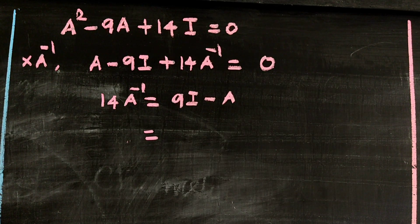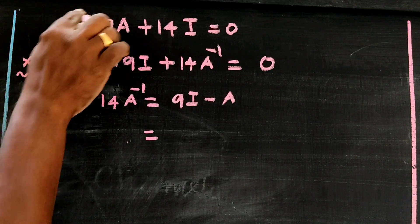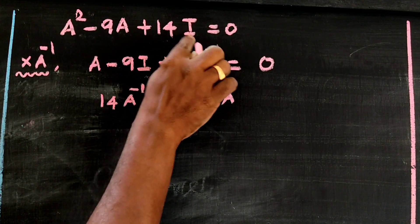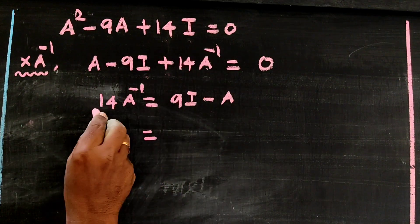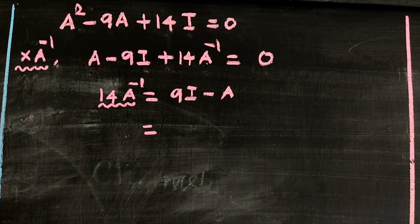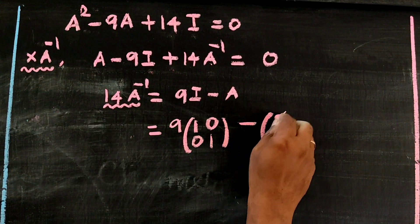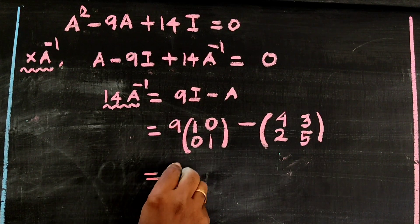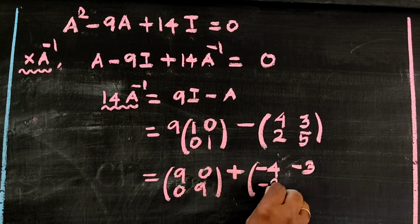From A squared minus 9A plus 14I equals zero, we derive A inverse. Multiplying through, the result gives the identity scaled by 9: [[9, 0], [0, 9]] plus 1, on the opposite side minus [[4, 3], [2, 5]].